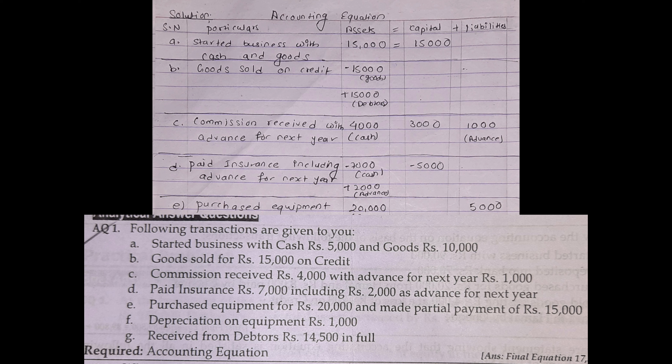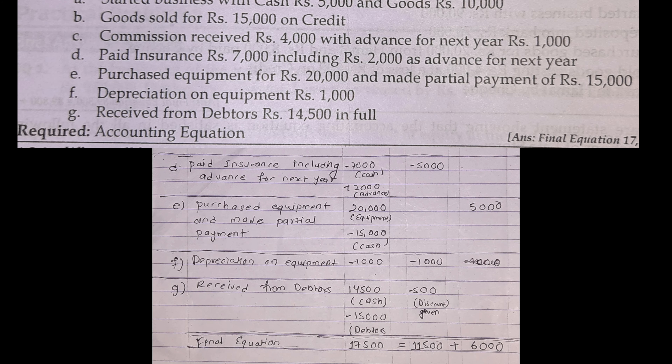We will increase cash by Rs. 3,000 and receive Rs. 1,000, so 3,000 plus 1,000 is equal to 4,000. We will increase by Rs. 7,000. Insurance paid of Rs. 7,000 including Rs. 2,000 as advance for next year. We will record Rs. 7,000.